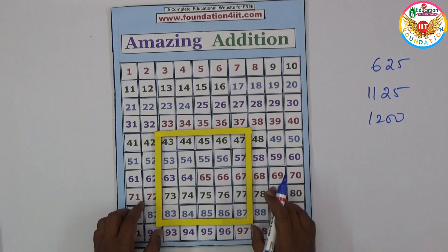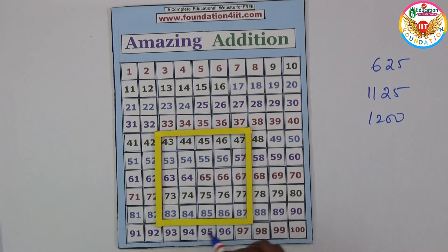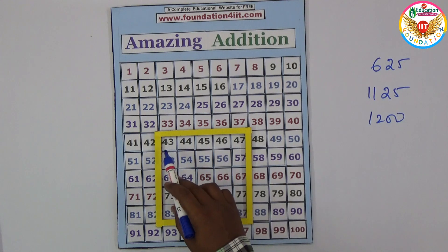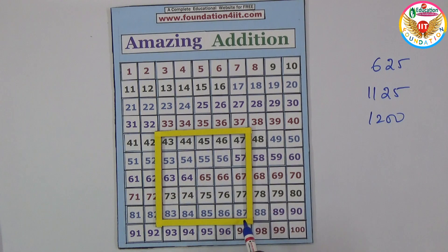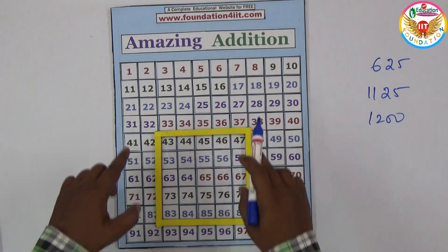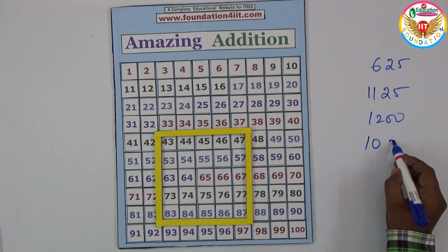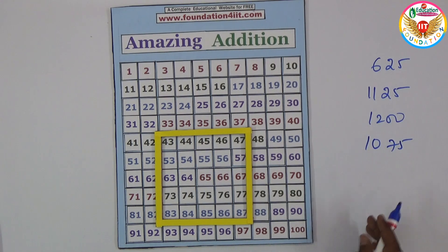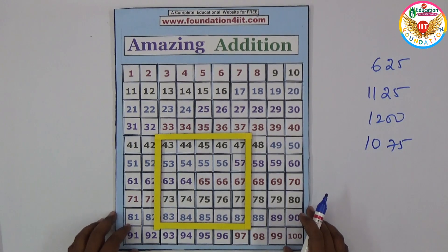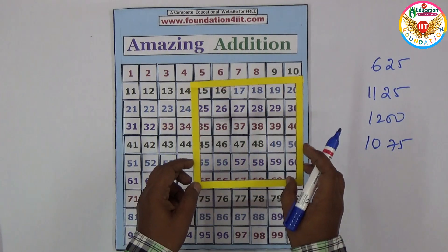You can take any place within the 1 to 100 board. Now I have placed it starting from 43 till 87. The sum of the numbers within this 5 by 5 box is 1075.